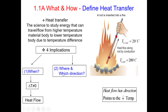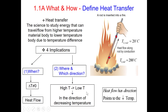The second implication is where heat transfer takes place, or in which direction. According to the second law of thermodynamics, heat flow always moves from a higher temperature location to a lower temperature location — it is in the direction of decreasing temperature. Heat flow has direction and is represented by an arrow pointing in the direction of decreasing temperature.